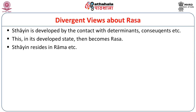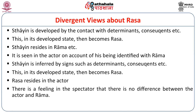There are various views about the emergence of Rasa. One says that Sthaibhava is developed by contact with determinants, etc. — just as I explained. Then in its developed state, Sthaibhava itself becomes Rasa. That Sthaibhava resides in historical characters like Rama, etc., but is seen in the actor on account of his being identified with Rama. For example, in the Ramayana serial on TV, we see the Sthaibhava in the character who plays Rama, not the historical Rama himself. Sthaibhava is inferred by signs such as determinants, consequences, etc. There are various theories like this, all presented here.